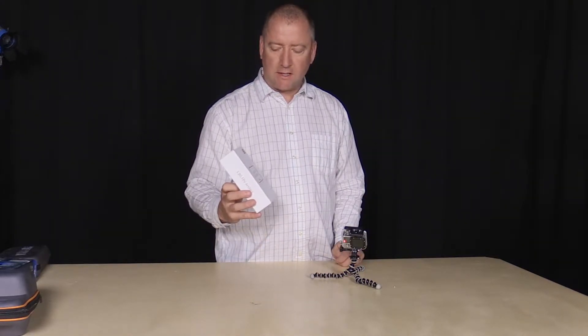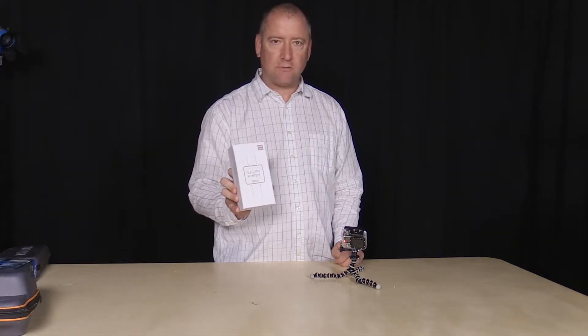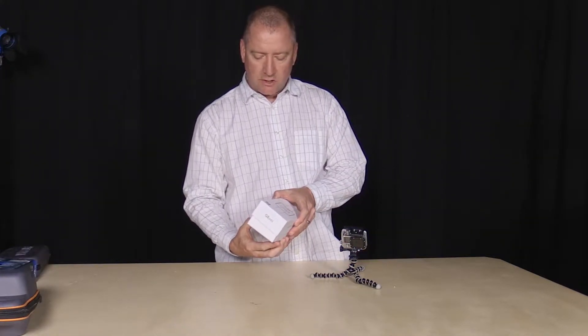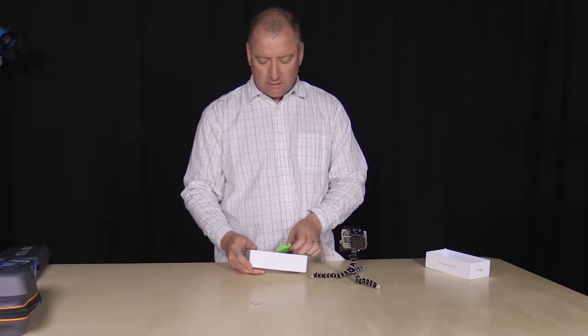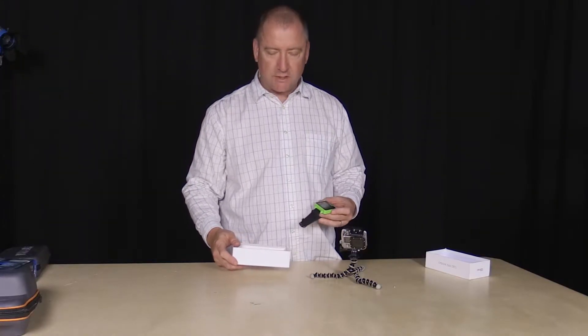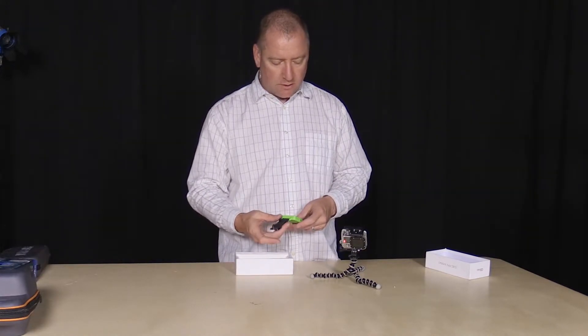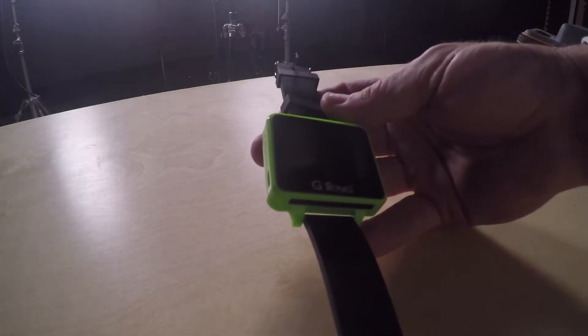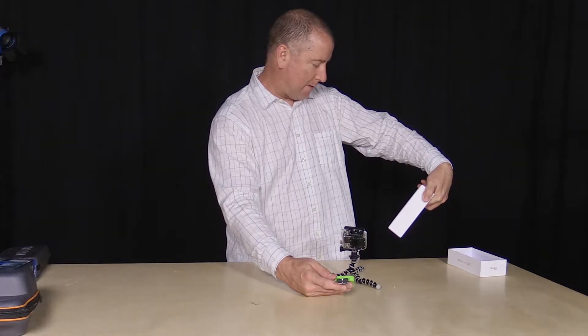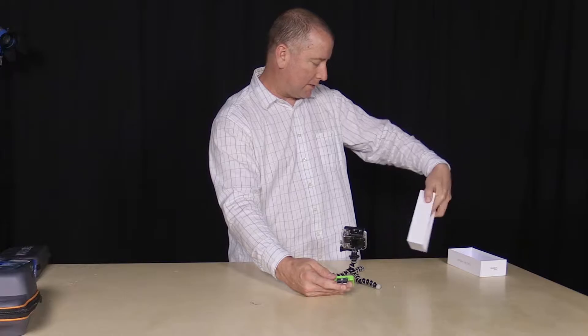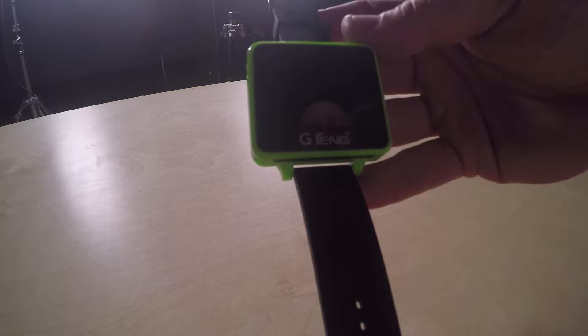It is the 5.8 gigahertz FPV artifact, which is basically a wristwatch that picks up FPV signals from 5.8 gigahertz transmitter, which is what I believe Immersion RC and Fat Sharks work on. It is made by G-Tang and it covers channels A through F and 1 through 8. So you should be able to actually see it straight out of the box with anything that is compatible with Fat Sharks.